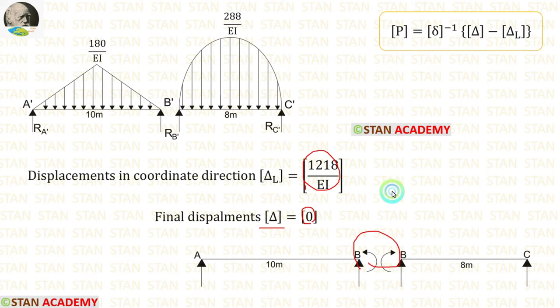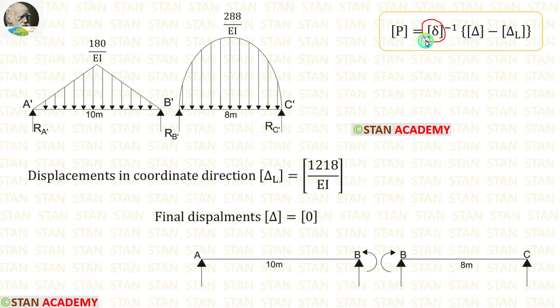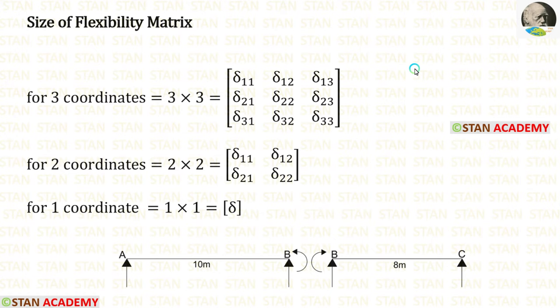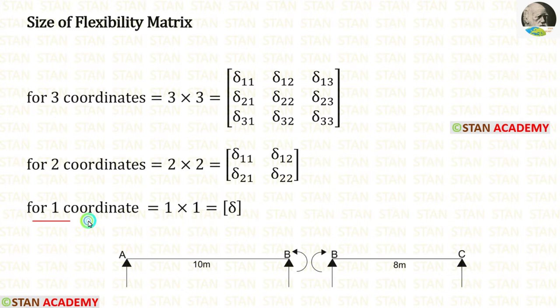In this formula, we have calculated the delta matrix and delta L matrix. Only one is remaining — that is the flexibility matrix. Now let us see the size of the flexibility matrix. If there are 3 coordinates, the size will be 3×3. If there are 2 coordinates, the size will be 2×2. If there is only one coordinate, the size will be 1×1, meaning there will be only one value. In this analysis, we are having only one coordinate, so the size will be 1×1.